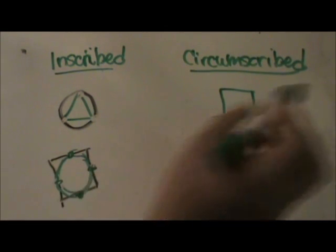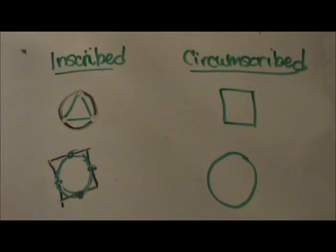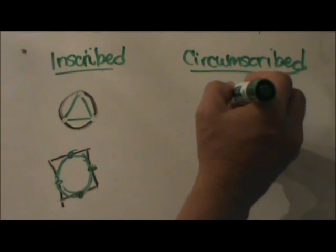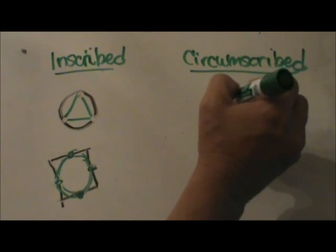Now let's look at circumscribed. If this polygon is circumscribed about a circle, that means the circle is inside of it. So we say the polygon is circumscribed about the circle.